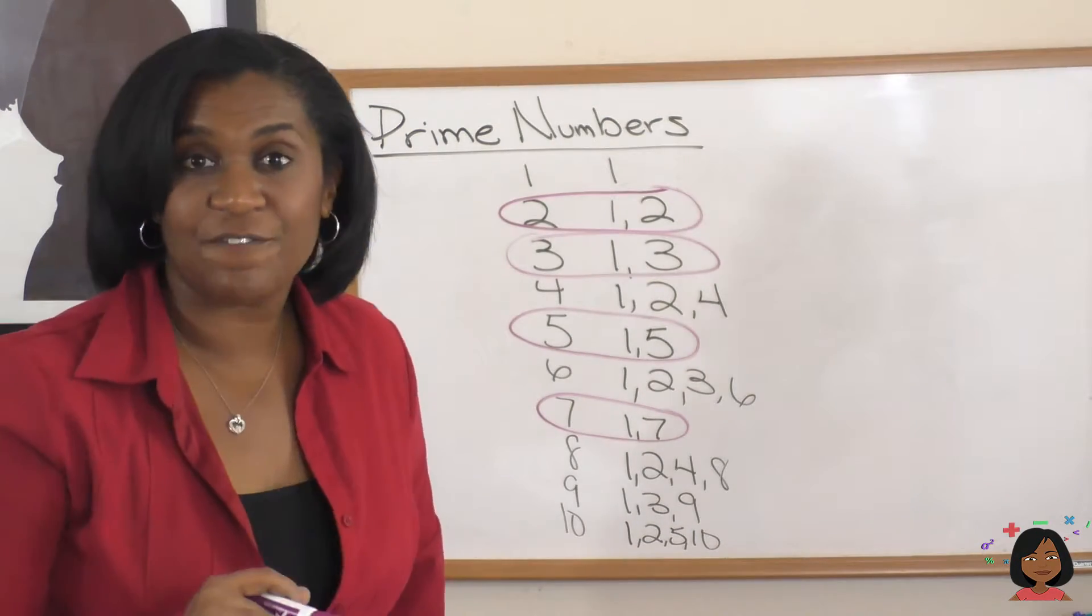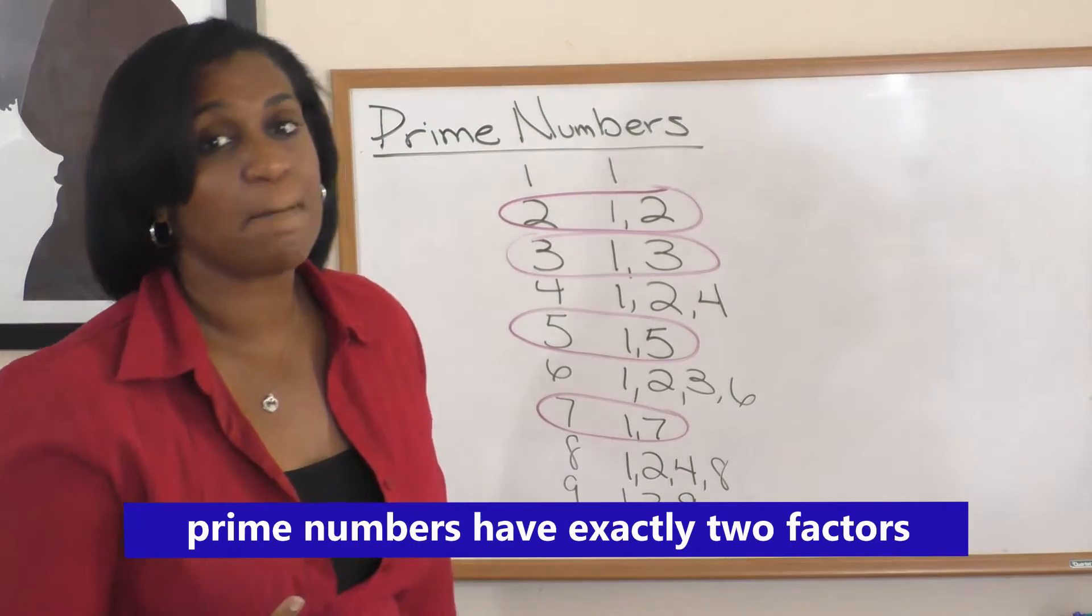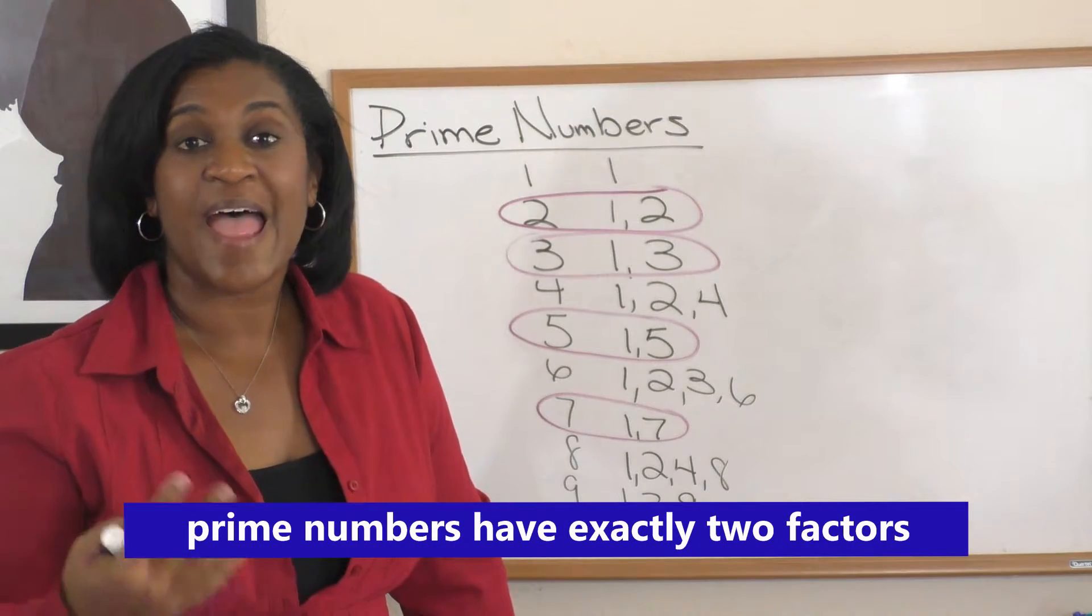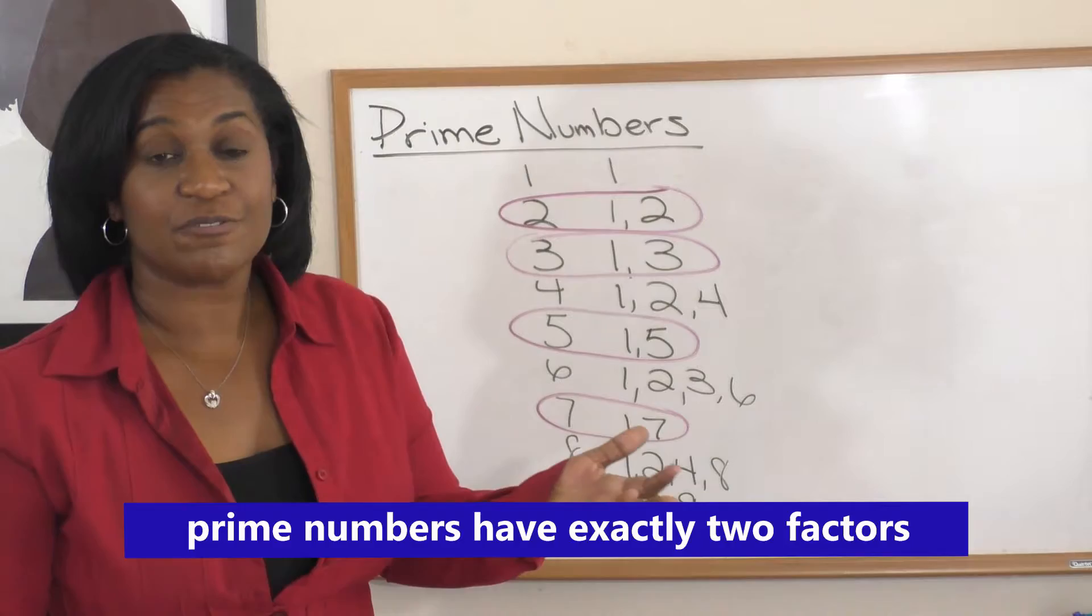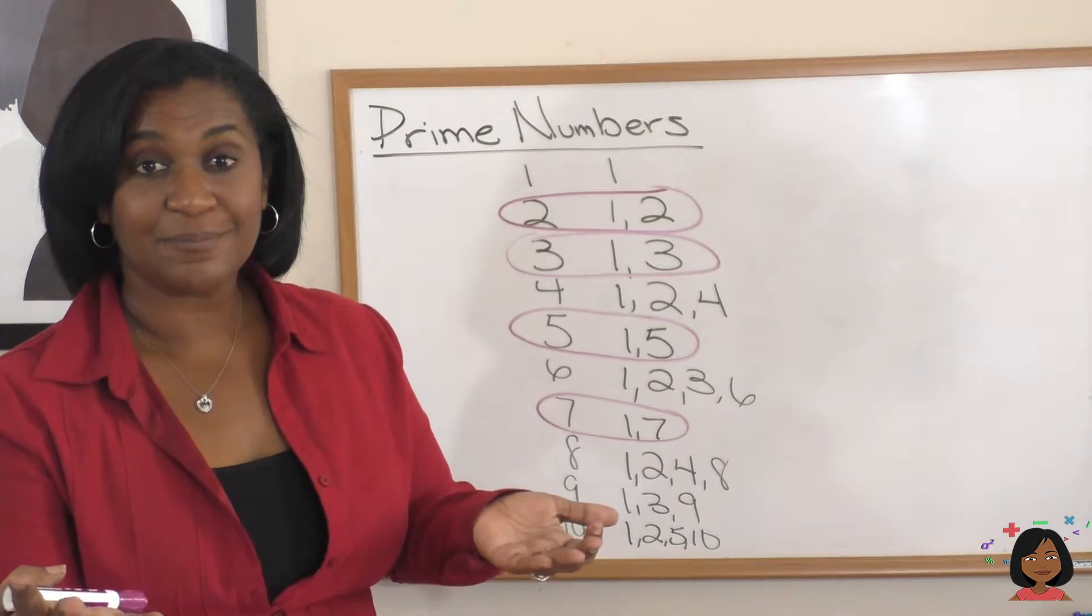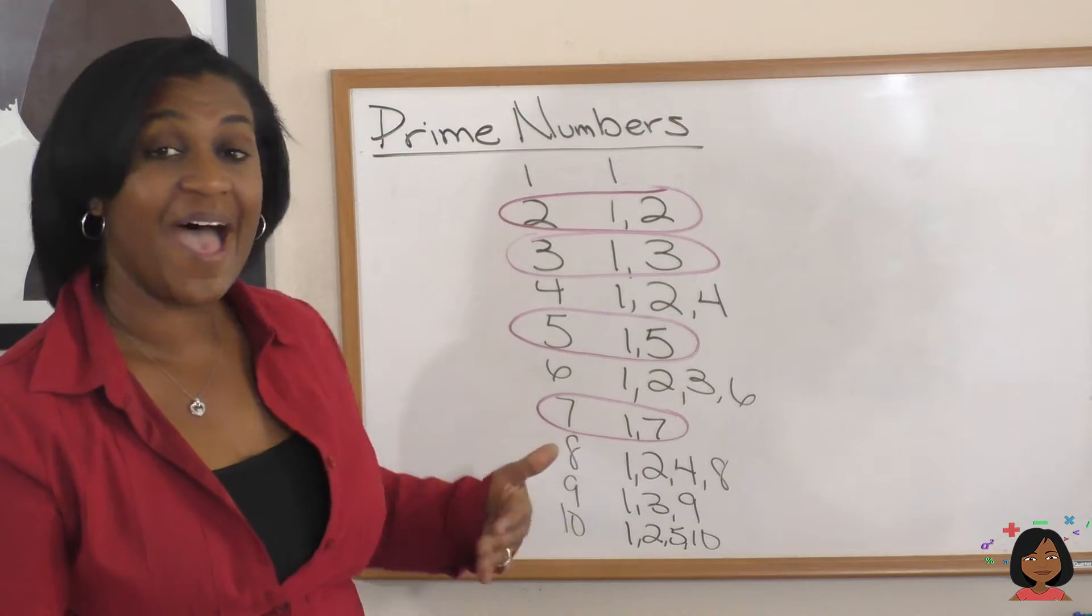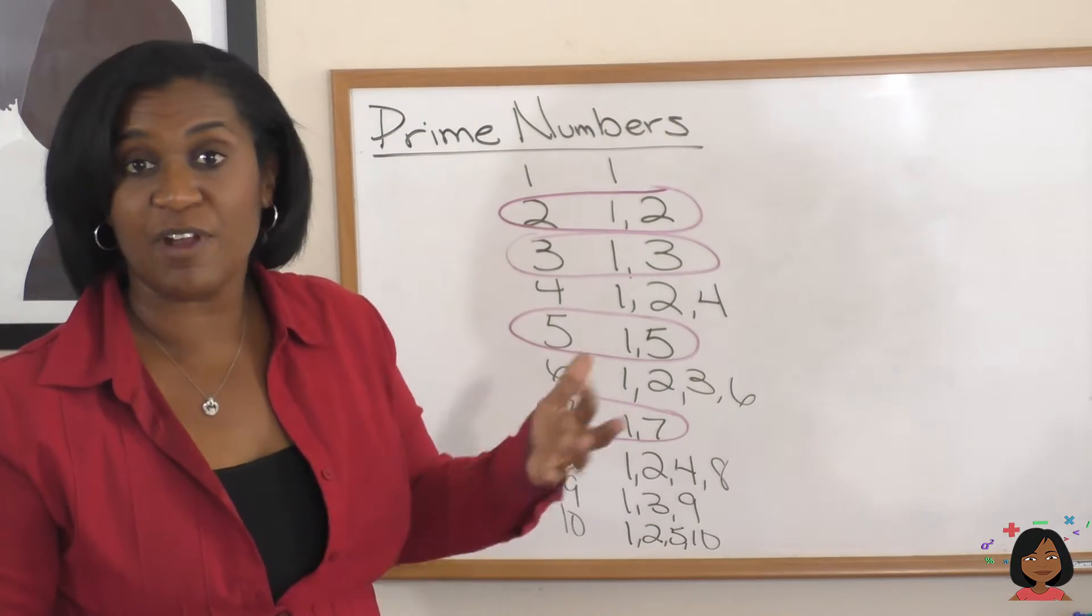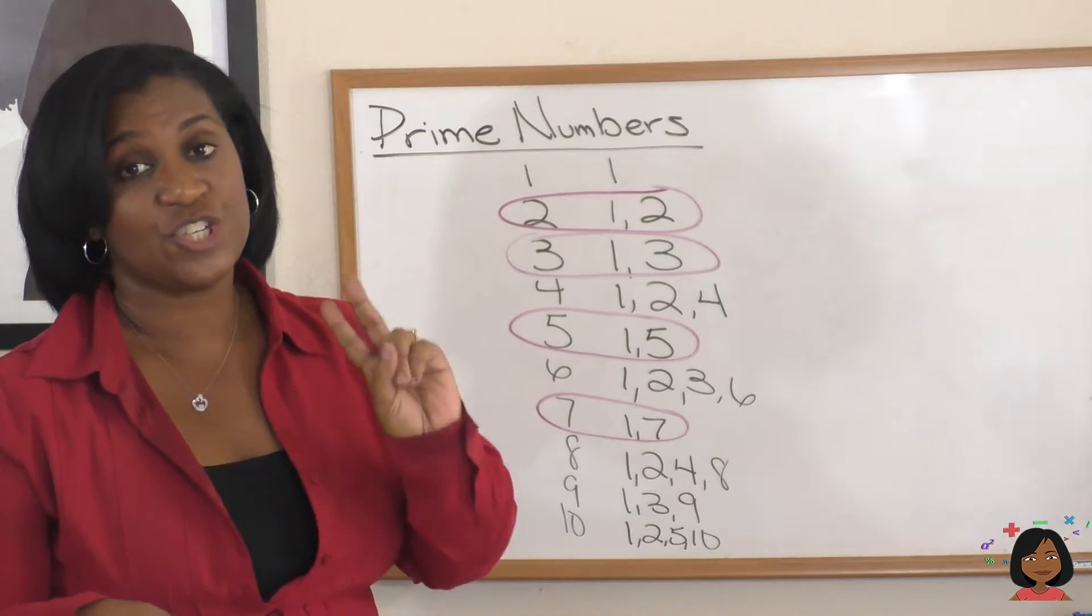Well, guess what? That's the definition of a prime number. A prime number has 2 factors. It's always 1 and that number. So, we can continue past 10 and look for other numbers that have exactly 2 factors.